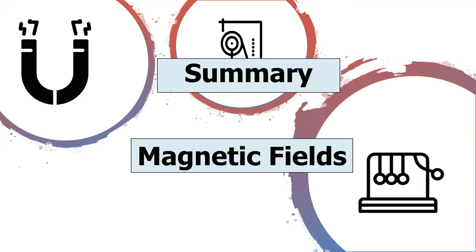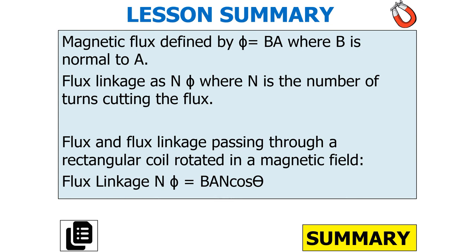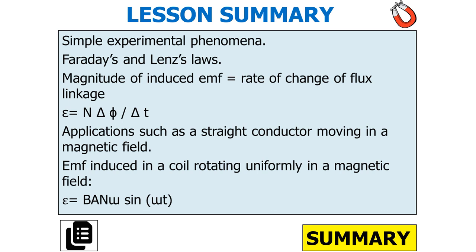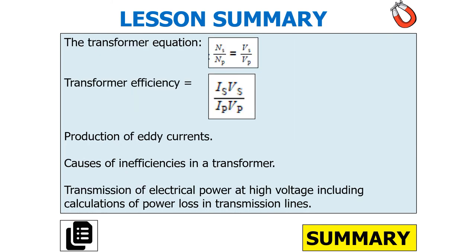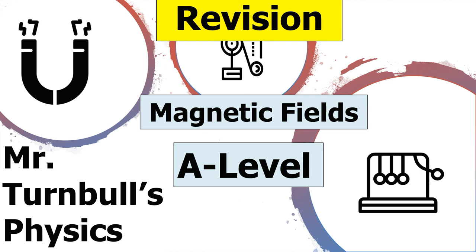In summary: magnetic flux is defined by phi equals BA where B is normal to A; flux linkage is N phi where N is the number of turns cutting the flux; flux linkage through a rectangular coil is N phi equals BAN cos theta. We should understand Faraday's law and Lenz's law, knowing that the magnitude of induced EMF is the rate of change of flux linkage, and that EMF in a coil rotating uniformly is BAN omega sin omega t. For sinusoidal voltages and currents we know RMS, peak-to-peak, and peak values. We understand the transformer equation, transformer efficiency, eddy currents, causes of inefficiency, and transmission of electrical power at high voltages including power loss calculations.